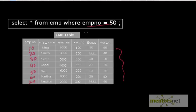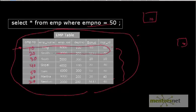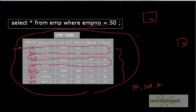Whenever you give this query, Oracle scans the data blocks row by row — similar to scanning the book page by page — because these rows are stored in different data blocks, each with a row ID or row address. Oracle eventually finds that employee number 50 is here and fetches the complete record. That is how it works for a 7-row table.